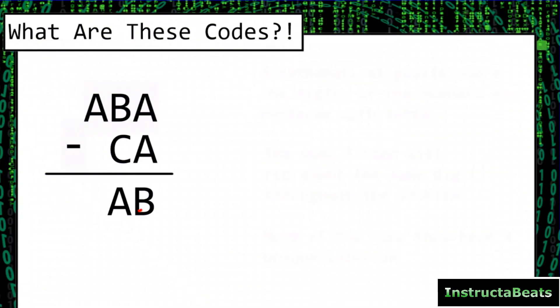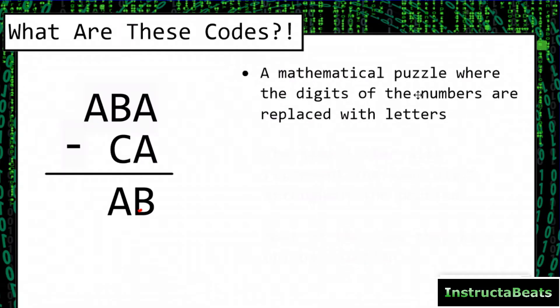So first of all, let's start off by talking about what this code actually is. What is ABA minus CA equals AB? A CryptoRhythm is a mathematical puzzle where the digits of the numbers are replaced with letters. So this is actually just a simple three-digit by two-digit subtraction problem, but instead of using digits, we have replaced them with letters.